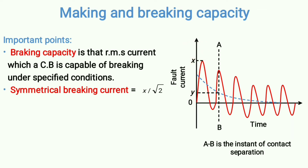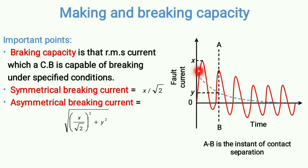In the presence of the decaying component, the fault current becomes asymmetrical. In the case of asymmetrical breaking current, we consider individual RMS values and the overall RMS value becomes √((X/√2)² + Y²), where Y is the value of the decaying transient component at the instant of contact separation.